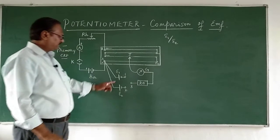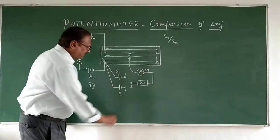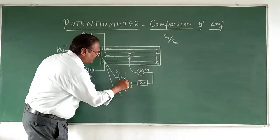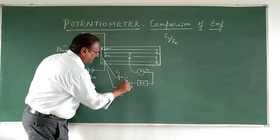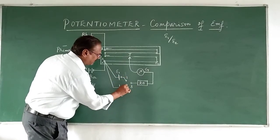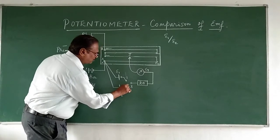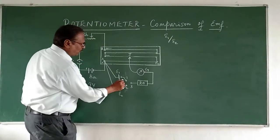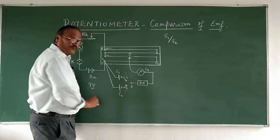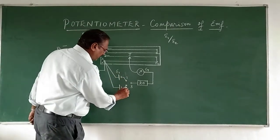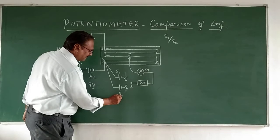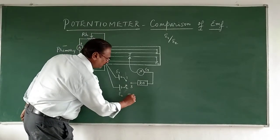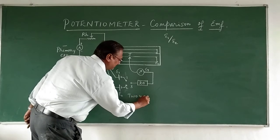This is a two-way key. I can simplify it further. I can make this as 1 and this as 2. So what I'm going to do is 1 is with epsilon 1 cell 1, and 2 is epsilon 2 that is cell 2, and 3 is the center point of the two-way key.